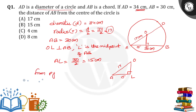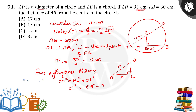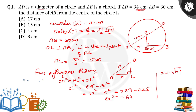From the Pythagoras theorem, hypotenuse OA squared is equal to AL squared plus OL squared. So OL squared is equal to OA squared minus AL squared. OA squared is 17 squared minus 15 squared, that is 289 minus 225, we get 64. So OL squared is equal to 64, then OL is equal to the square root of 64, which is equal to 8 cm. Option D is the right answer.